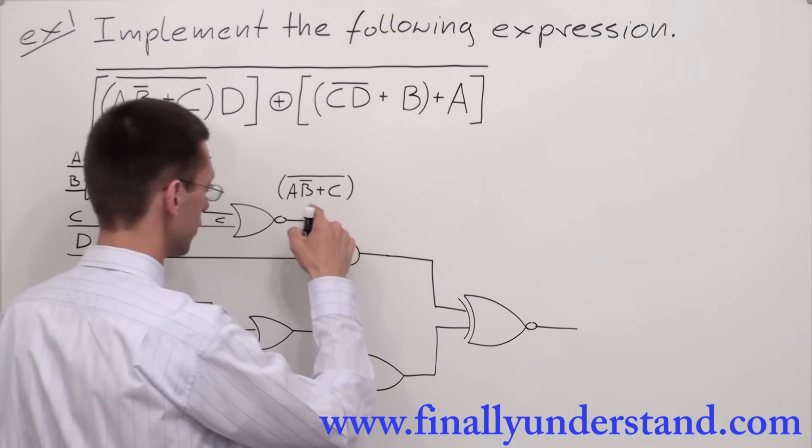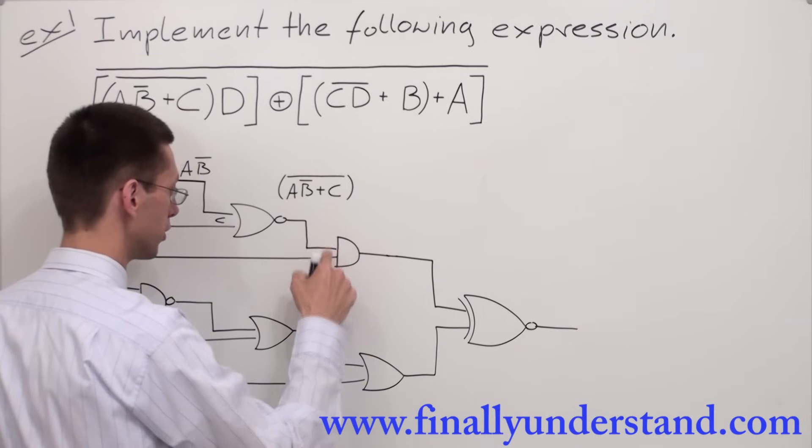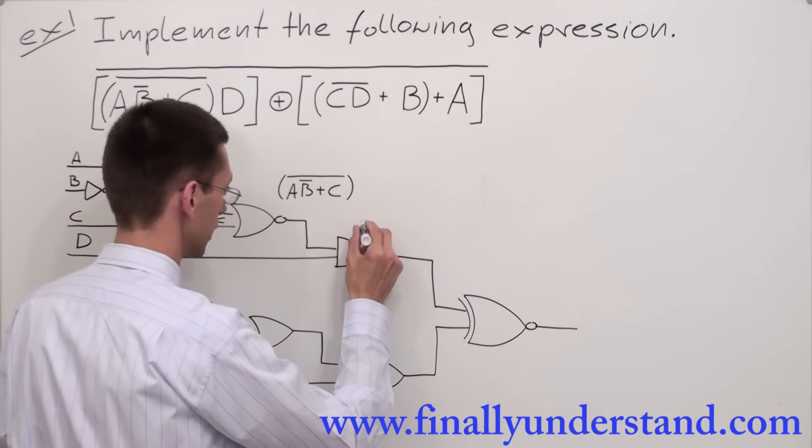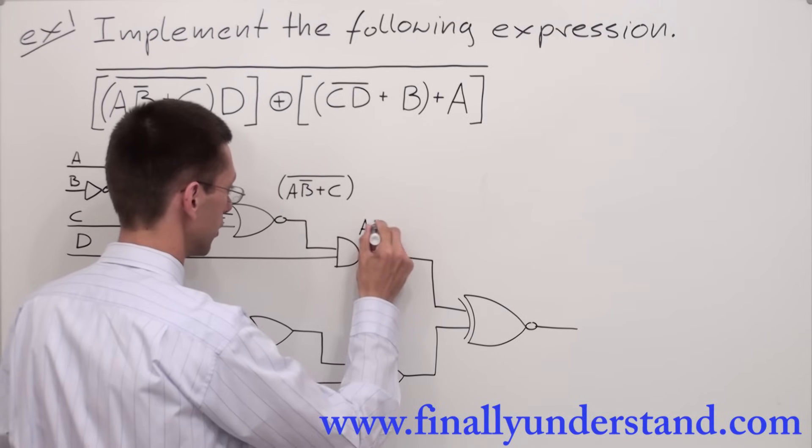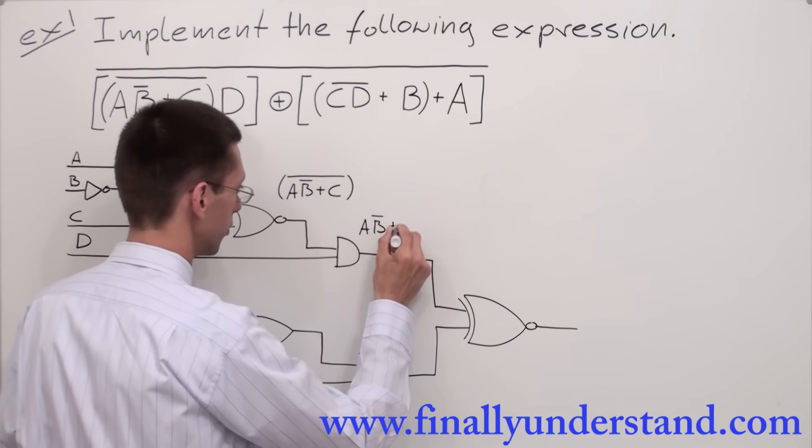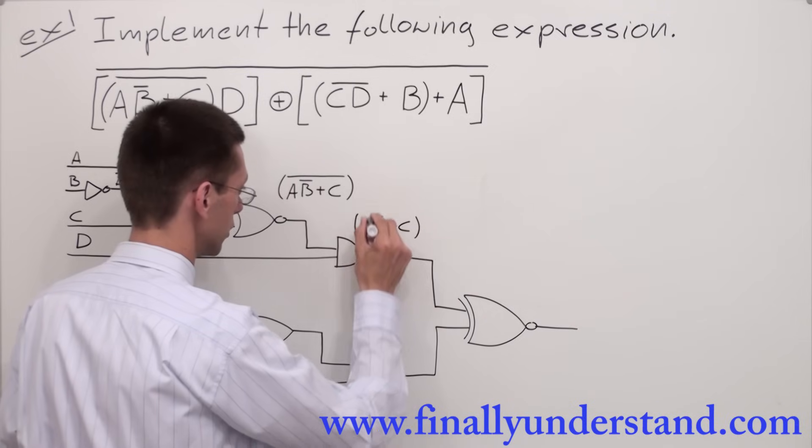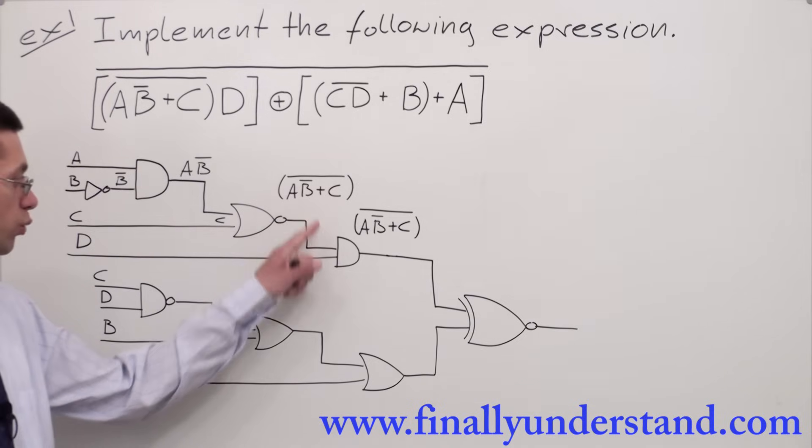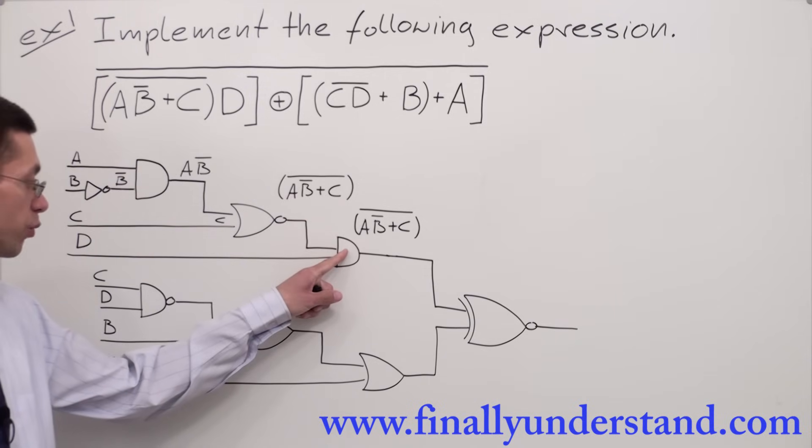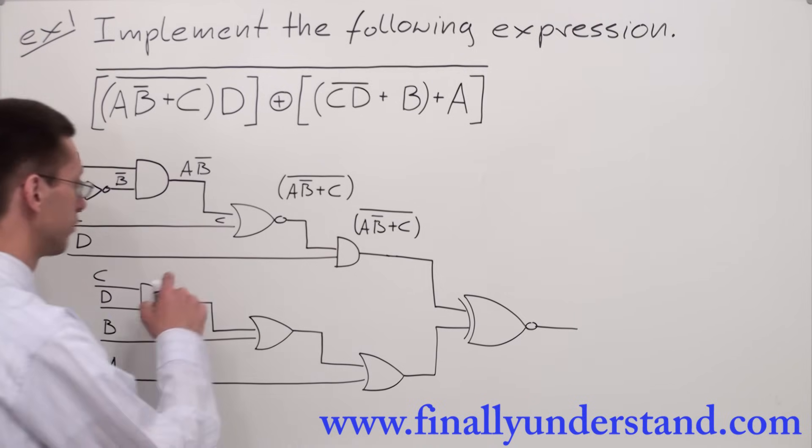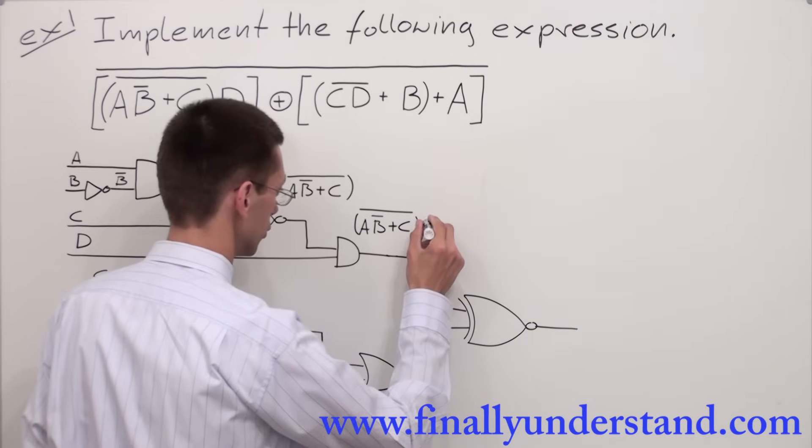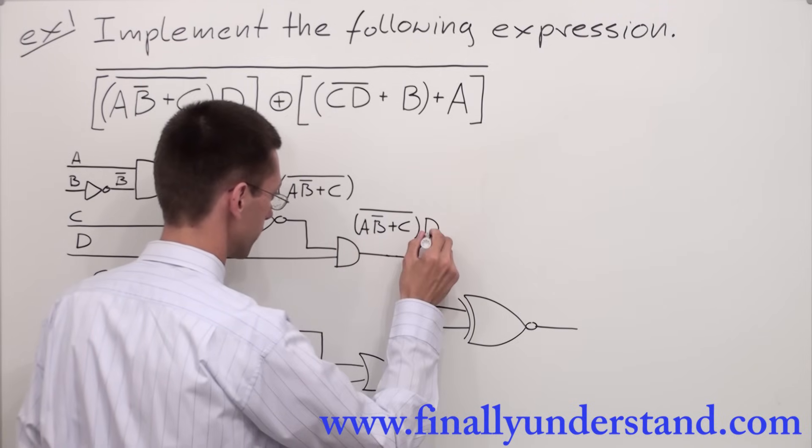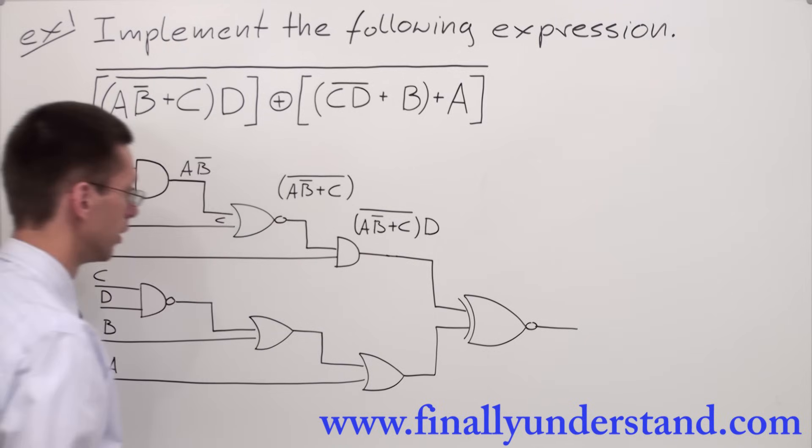Now next, I have the input connected to the AND gate, so it means whatever is on the first input has to be multiplied by the second input. So it means that I'm going to have (AB̄+C)̄. This is the expression which goes to my first input of the AND gate, and we have to multiply this by D. Remember, AND gate stands for multiplication.